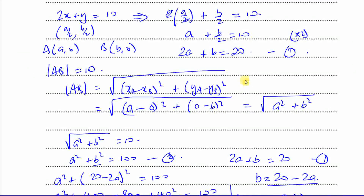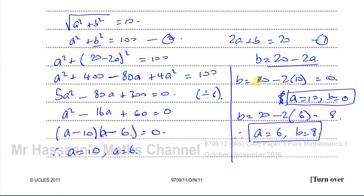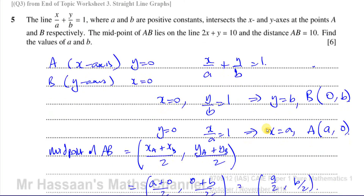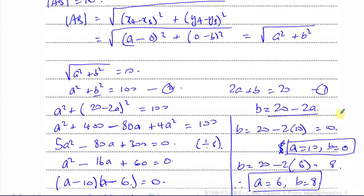To summarise the method: the question gives us information to form two equations. One is a non-linear equation and the other is linear. We take the linear equation, make one variable the subject, substitute into the other equation to eliminate that variable, and solve.